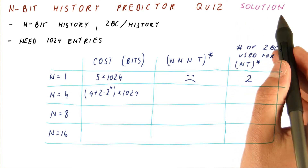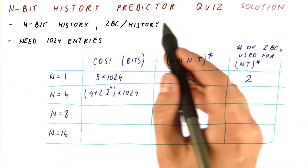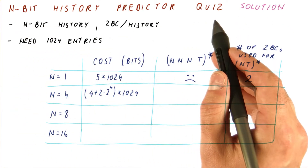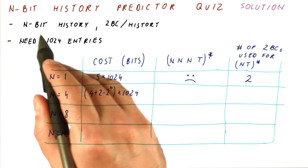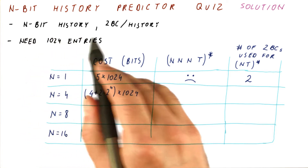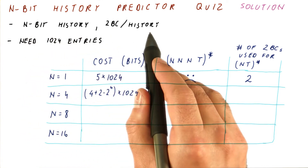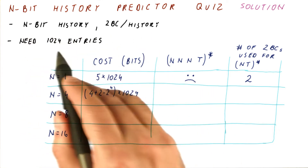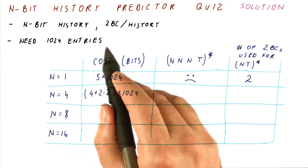Let's now look at the solution for our n-bit history predictor quiz. We want to have an n-bit history predictor with two-bit counters per possible history, and we need 1,024 entries like that.